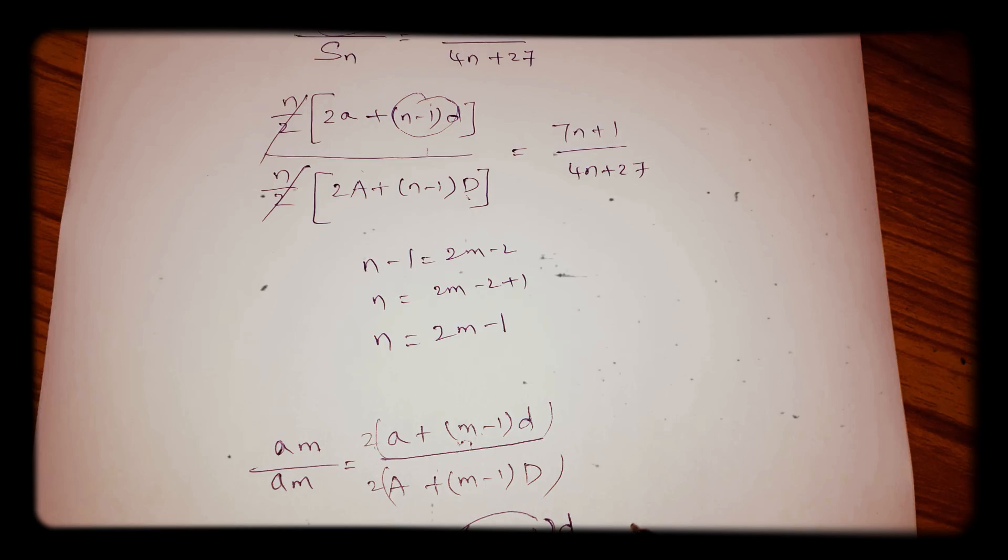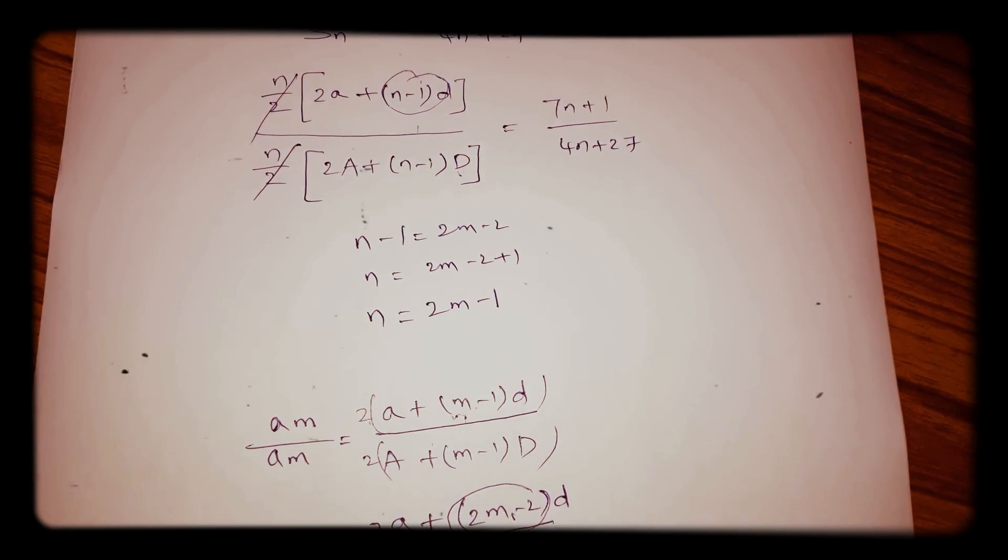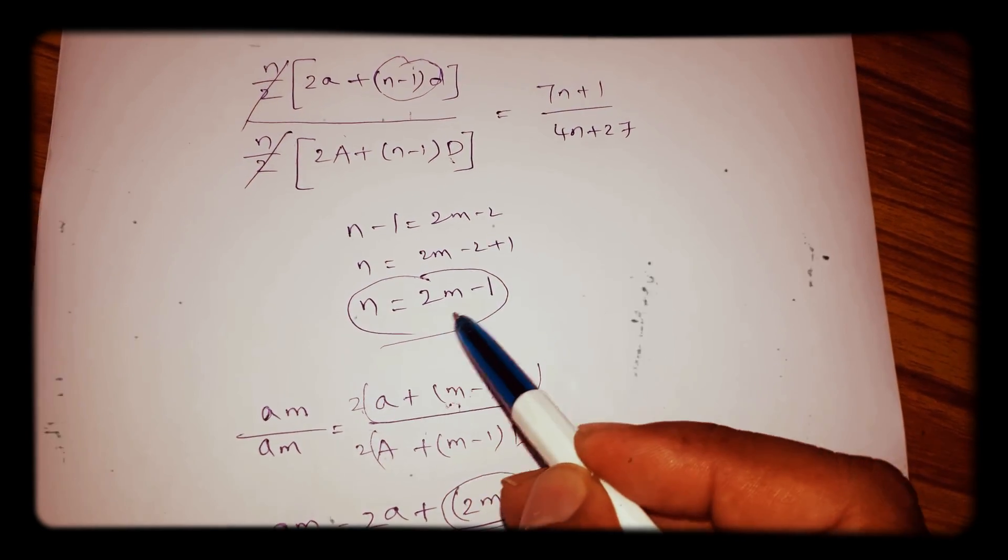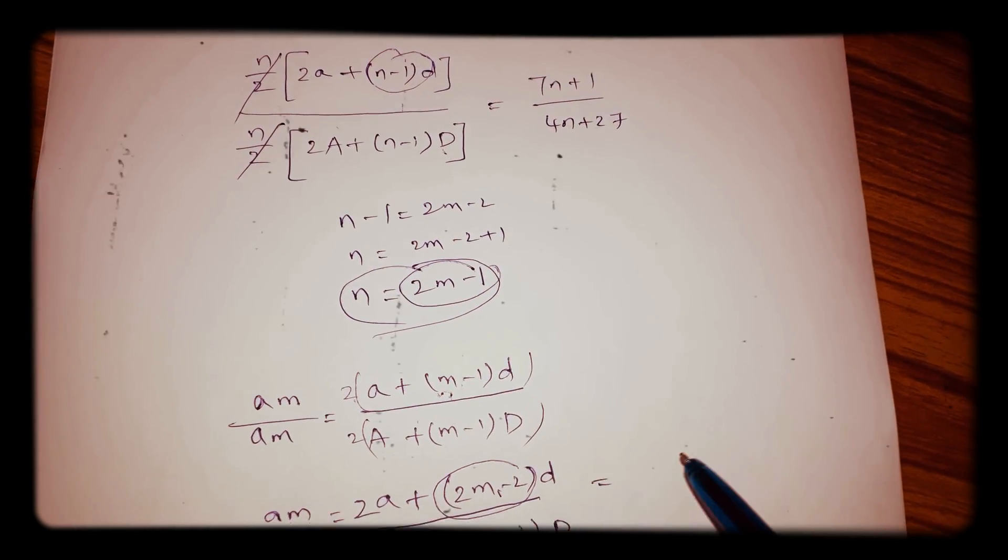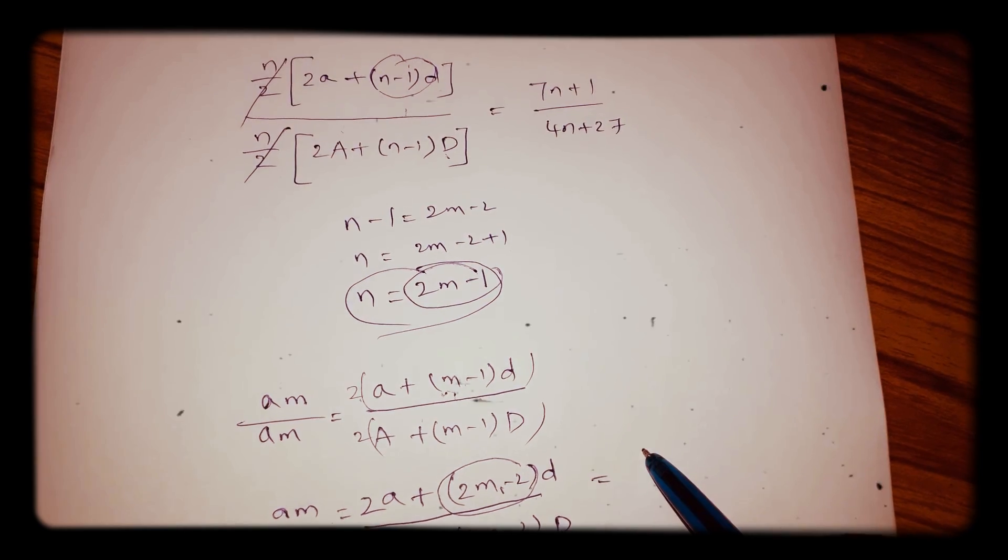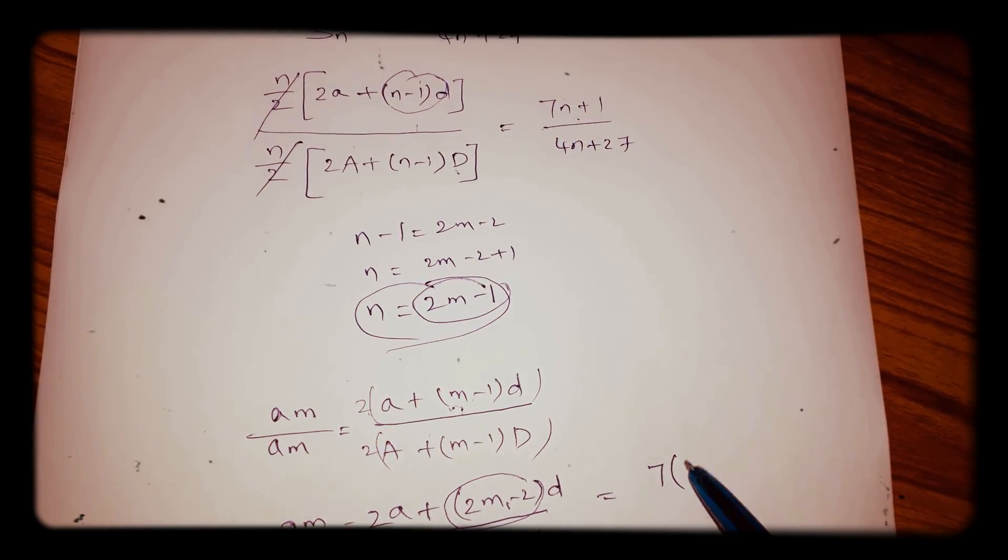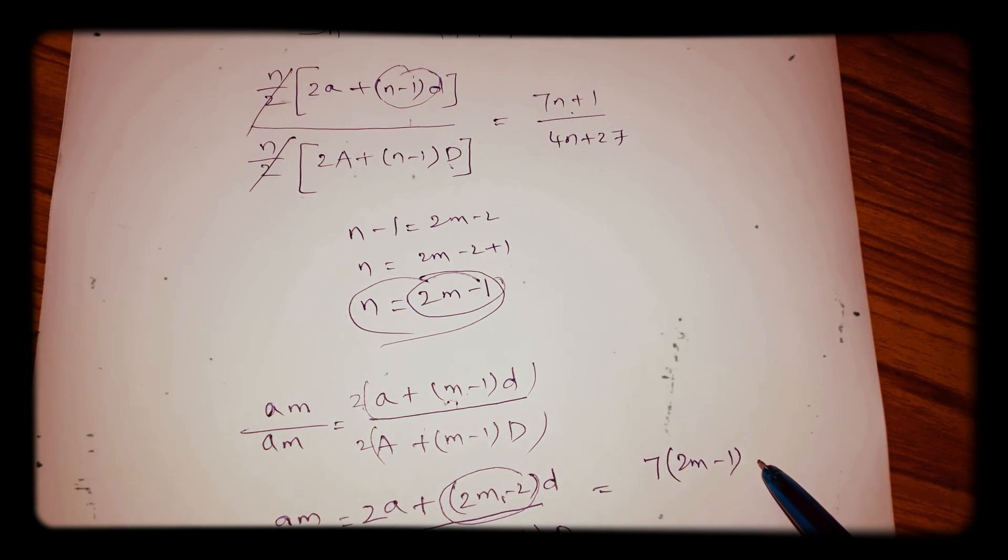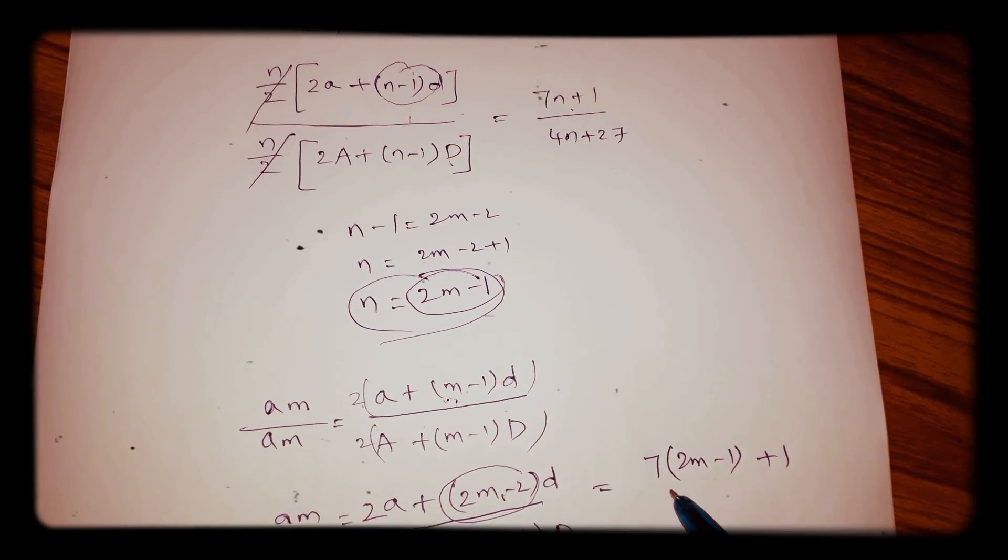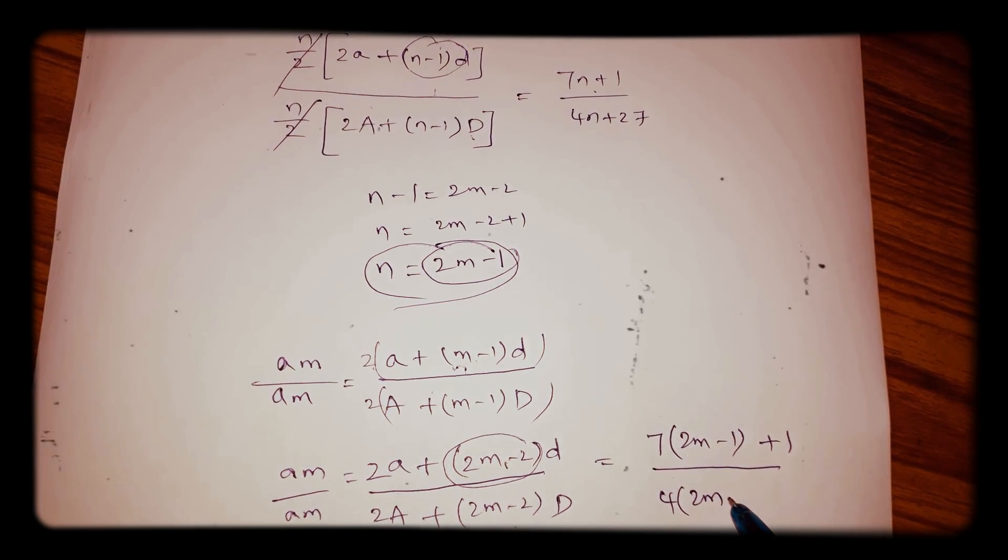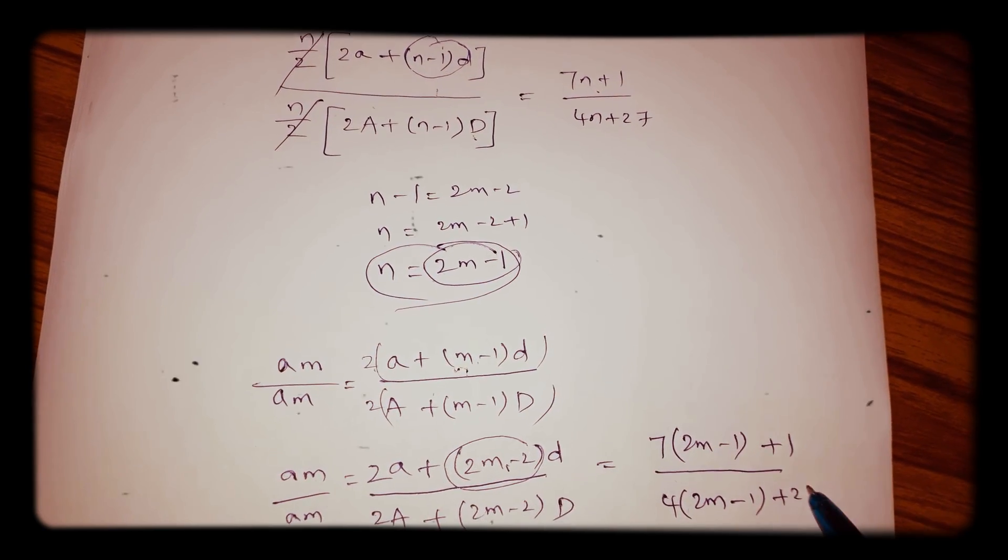So to get the ratio of mth terms, in place of n substitute (2m-1). So 7 into, in place of n substitute (2m-1) plus 1, by 4 into (2m-1) plus 27.